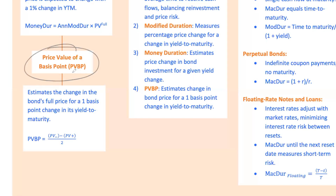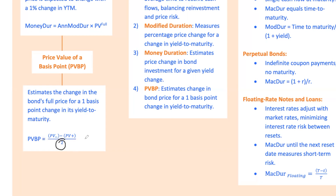Now let's get into the price value of a basis point, PVBP. This measure takes sensitivity a step further by estimating the change in a bond's full price for a 1 basis point change — 0.01% — in its yield to maturity. Calculate the difference in the bond's full price when the yield decreases and increases by 1 basis point and divide by 2. If a bond's full price is $100.05 when the yield decreases by 1 basis point and $99.95 when the yield increases by 1 basis point, the PVBP would be 5 cents — telling you that a 0.01% change in yield affects the bond's price by about 5 cents.